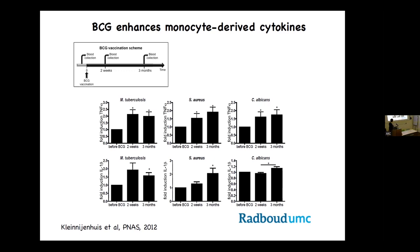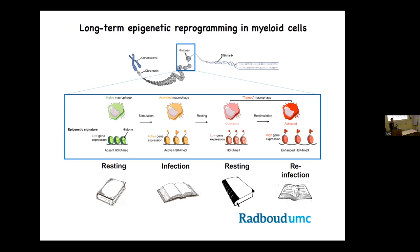We tested this by performing experiments with BCG-vaccinated individuals, testing the function of innate immune cells before and after BCG vaccination — not only with Mycobacterium tuberculosis, the specific stimulus related to BCG, but also with non-related pathogens such as Staphylococcus aureus, a gram-positive bacteria, or Candida albicans, a fungus. We observed that monocyte production of pro-inflammatory cytokines was also increased after BCG vaccination.